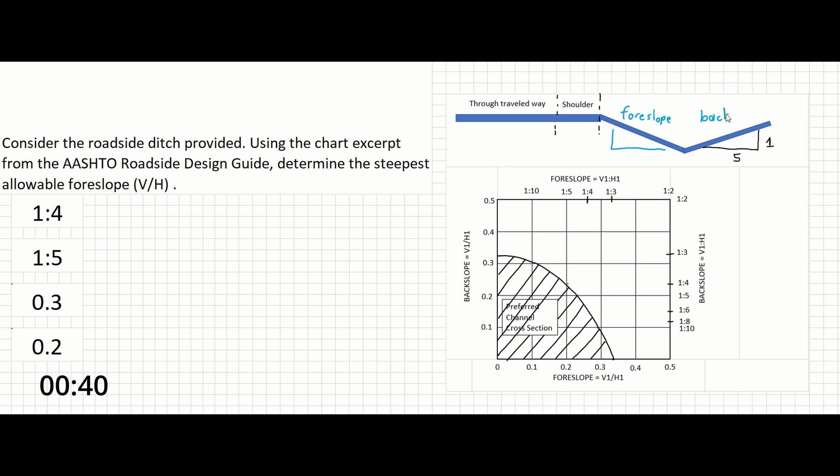So, we can draw a line from the backslope given, which is 1 colon 5, or one vertical unit to five horizontal units.